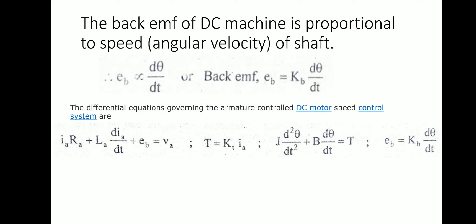The back EMF of a DC machine is always proportional to the speed of the shaft. That is, Eb is proportional to dθ/dt, so Eb = KB × (dθ/dt).